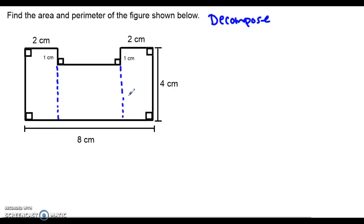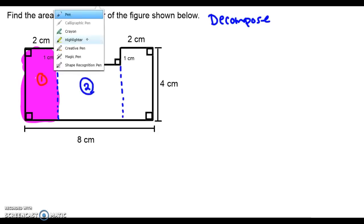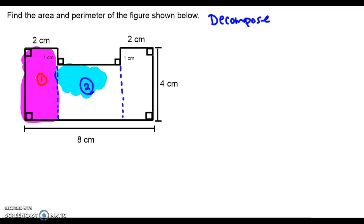To stay organized, I'm going to label each of the three shapes that I've decomposed my figure into with a number. I'm going to call the first rectangle Rectangle 1, and I'll highlight its area. I'm going to call the middle rectangle Rectangle 2, and I'll highlight its area in blue. And I'm going to call the third rectangle Rectangle 3, and I'll highlight its area in green.